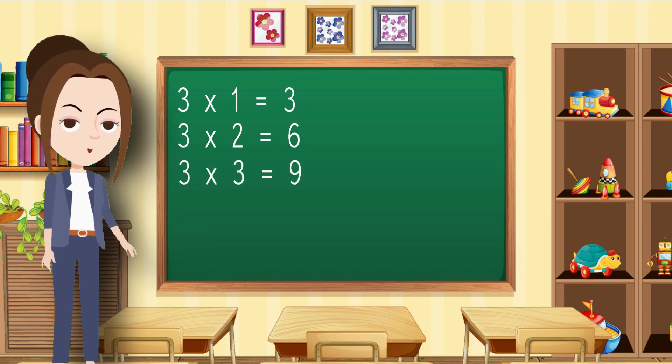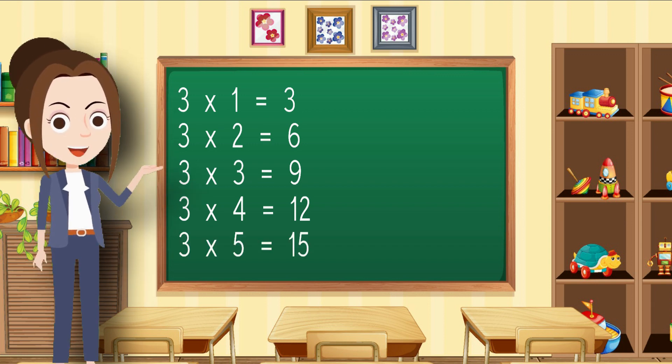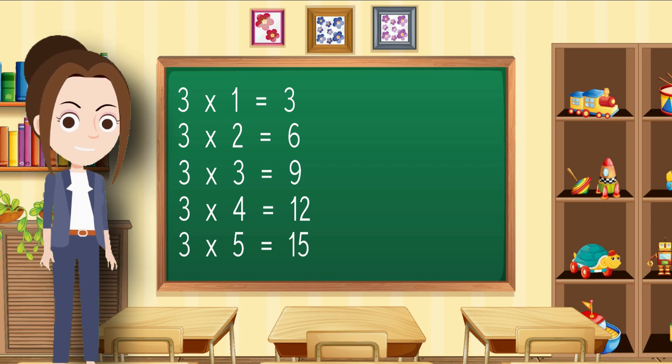Three fours are twelve, three fives are fifteen, three sixes are eighteen.